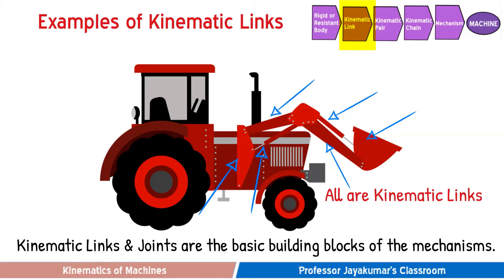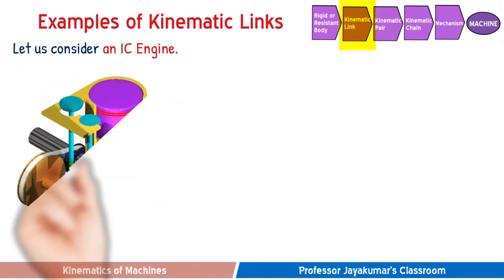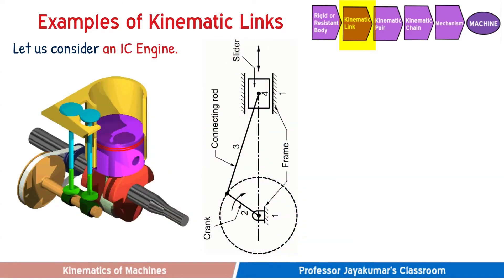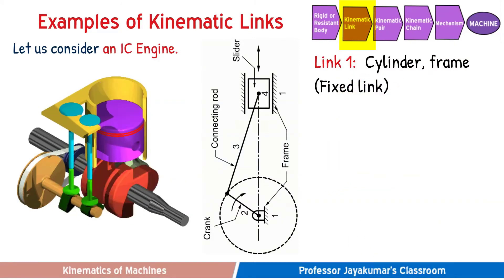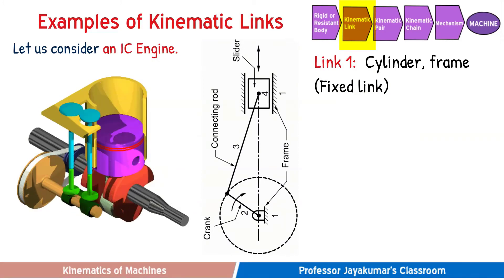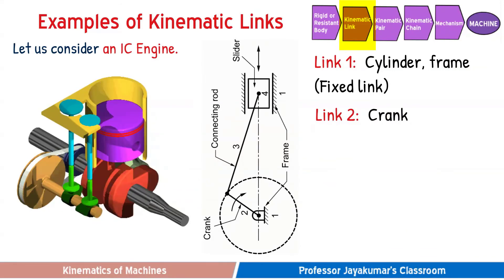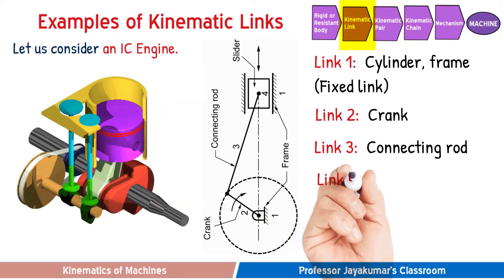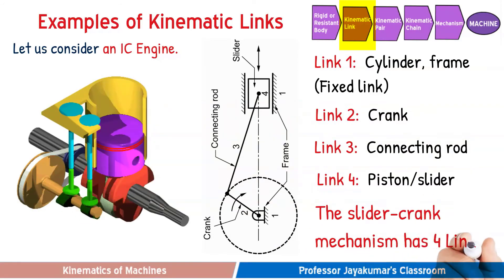Consider another example: an IC engine. A line sketch indicating various links is shown. The various fixed members such as the cylinder and frame are considered as link 1. Since the crank has relative motion with respect to the fixed link, the crank is link 2. The connecting rod is link 3 because it has relative motion with respect to the crank. The piston or slider is link 4. Hence the slider-crank mechanism has 4 links.